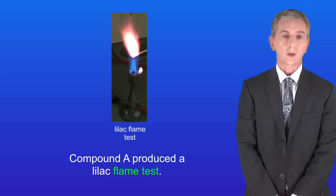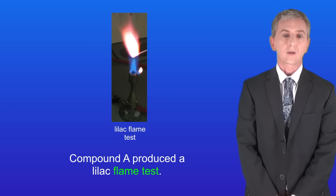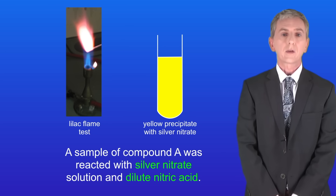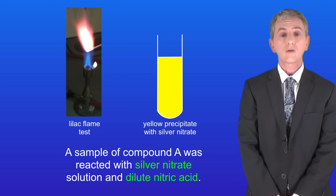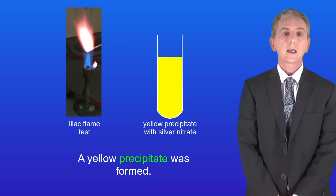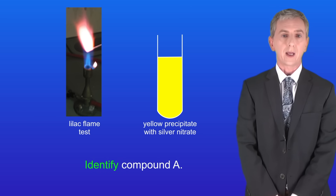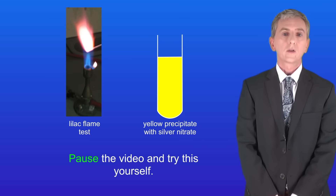Here's the first question. Compound A produced a lilac flame test. A sample of compound A was reacted with silver nitrate solution and dilute nitric acid. A yellow precipitate was formed. Identify compound A. Pause the video and try this yourself.